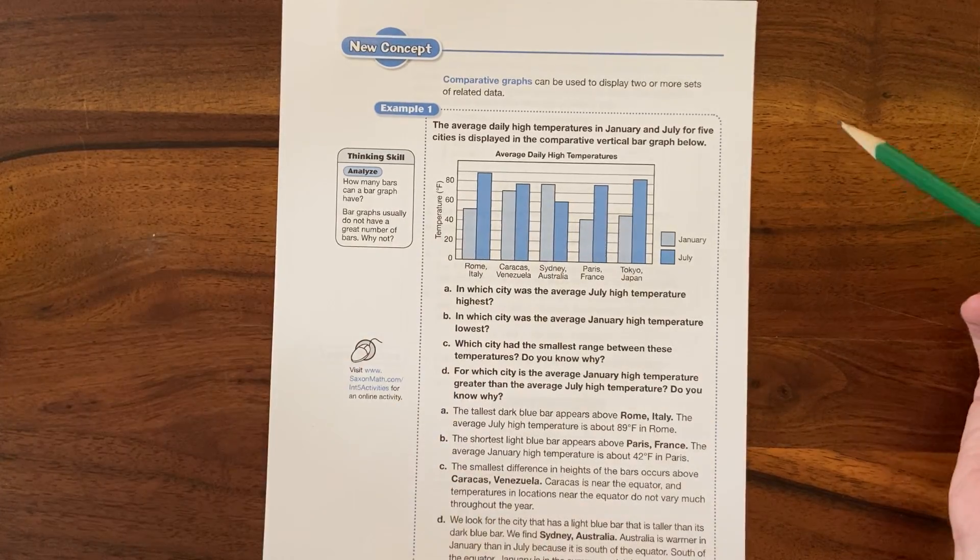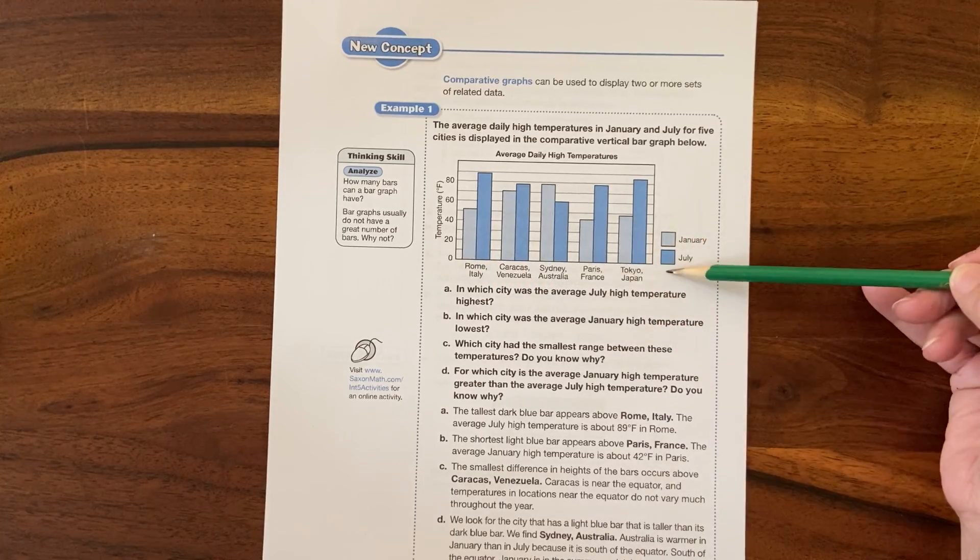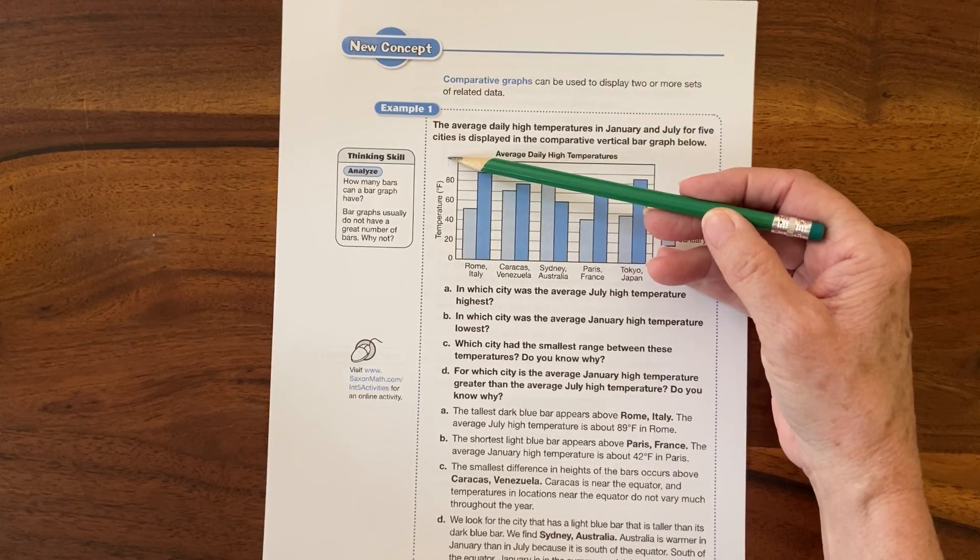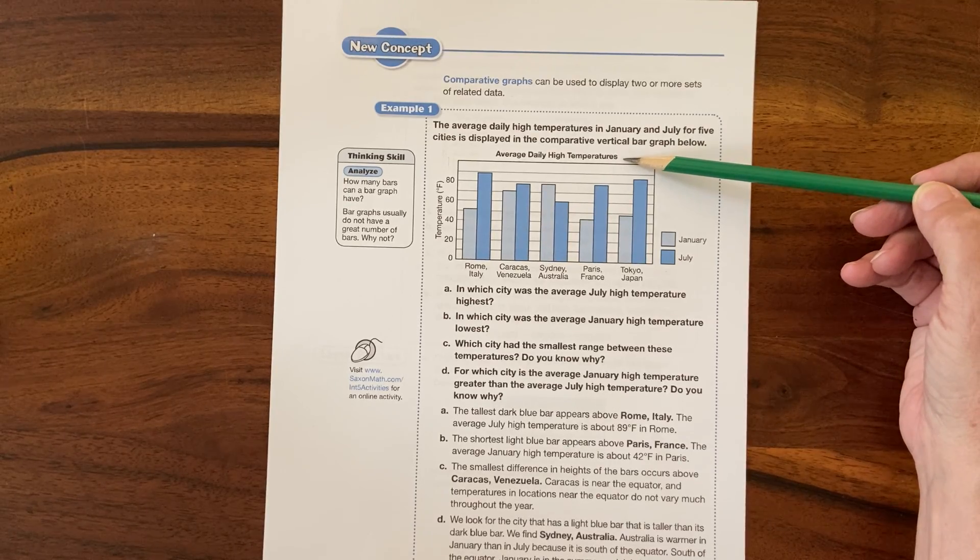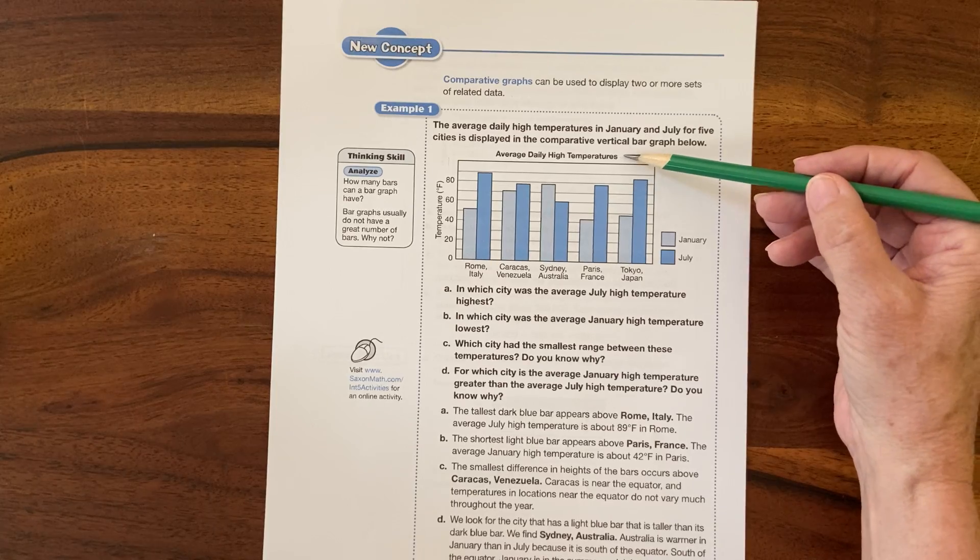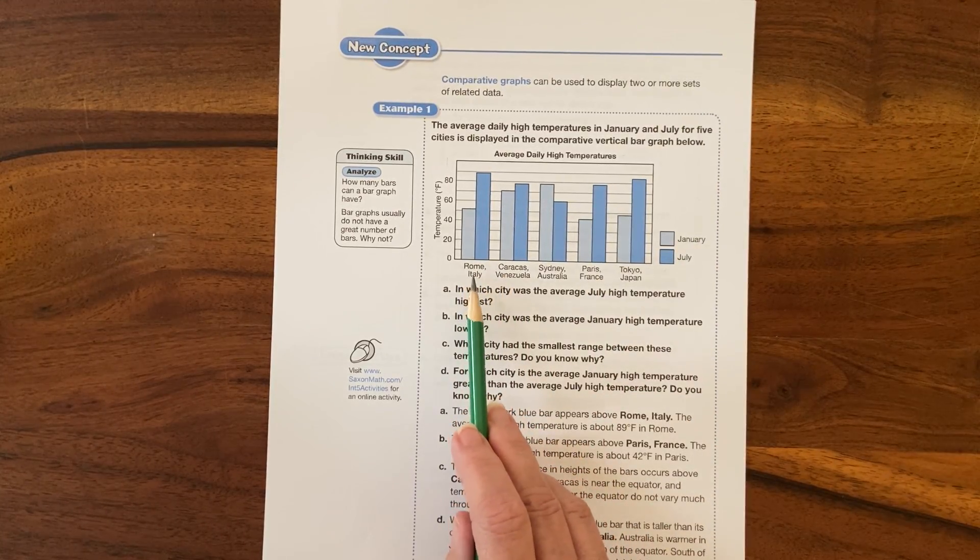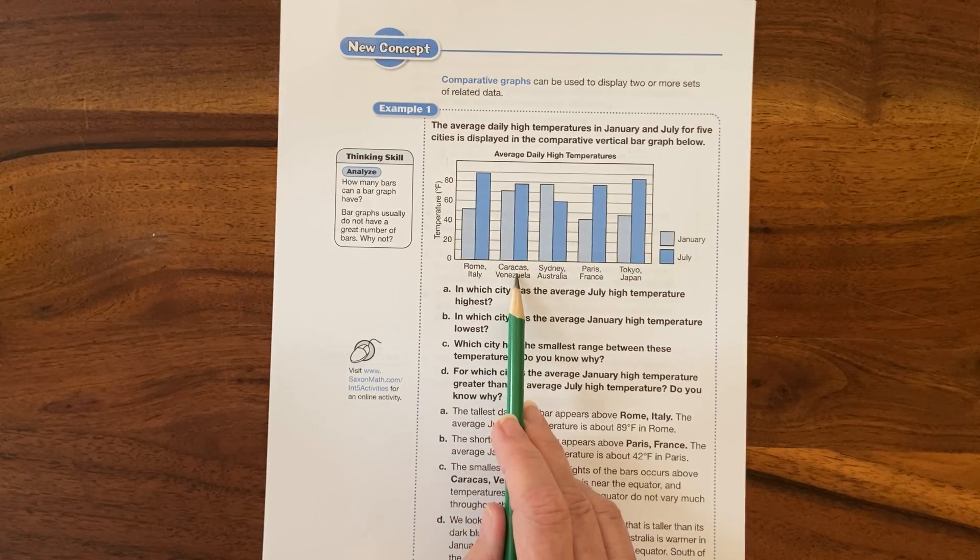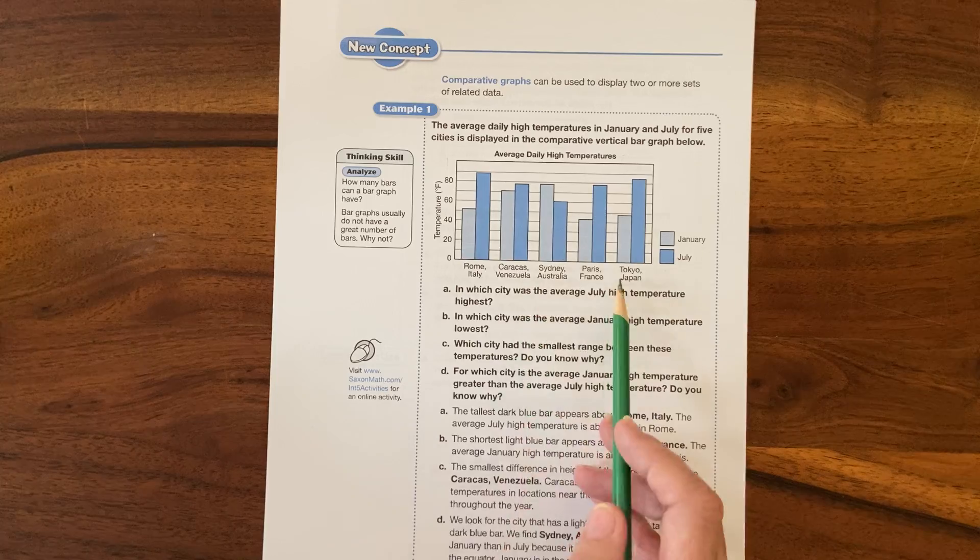If you remember, a graph always has a title, labels on the x-axis and labels on the y-axis. So this one is comparing average daily high temperatures - that's how we know what the graph is about. Then we come down here and look at the x-axis.